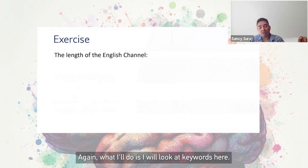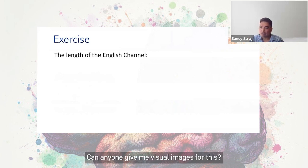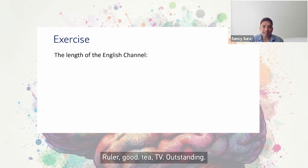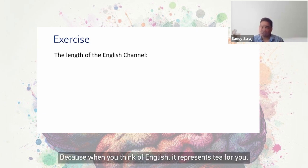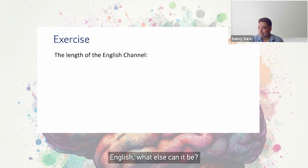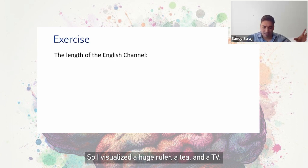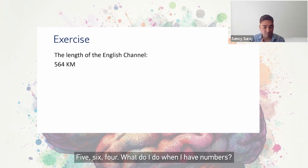What I'll do is look at keywords. Length is one keyword, English is one, channel is one. Can anyone give me visual images for this? Just focus on the question first — a ruler for length, a T for tea representing English, a TV for channel. So I visualize a huge ruler, a T, and a TV.